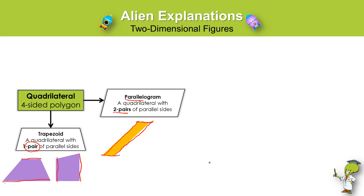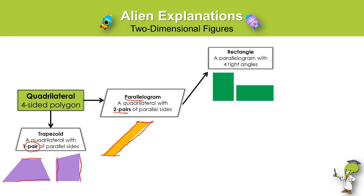A special kind of parallelogram that has four right angles is what we call a rectangle. So a rectangle is a parallelogram, which means it's also a quadrilateral. A rectangle has two pairs of parallel sides — there's one pair and here's the other pair — but it also has four right angles.